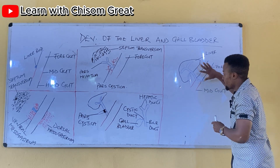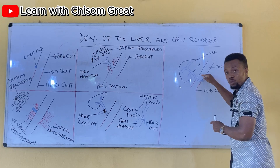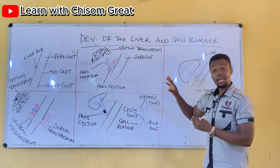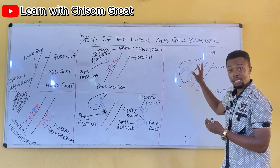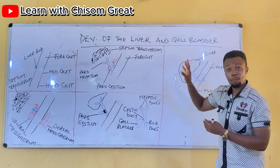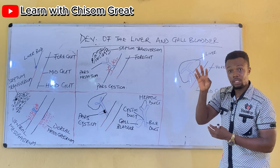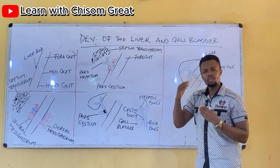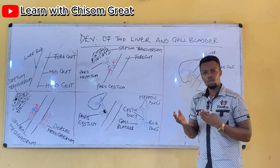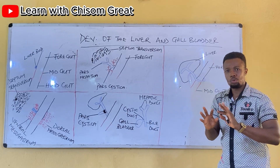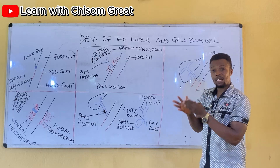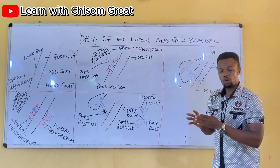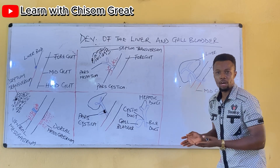This part gave rise to the duodenum, and that is where the bile duct opens. After this development, by the tenth week, the liver forms about 10% of the total weight of the developing embryo. Coming to the seventh month, the liver comes to form about 5% of the weight of the developing embryo.